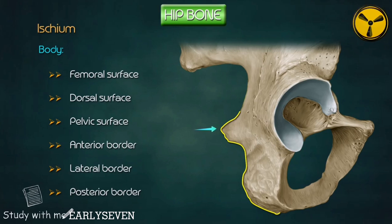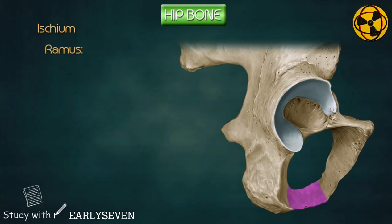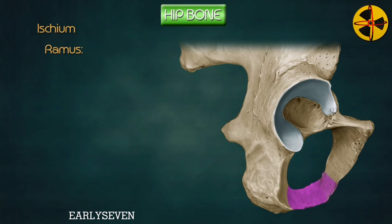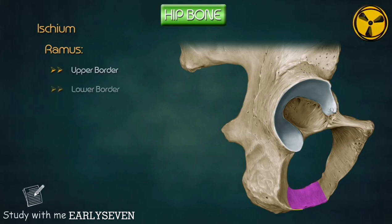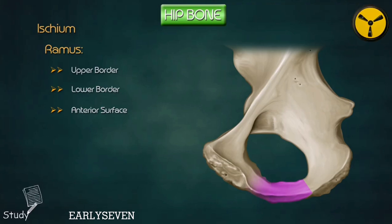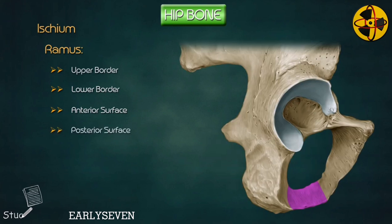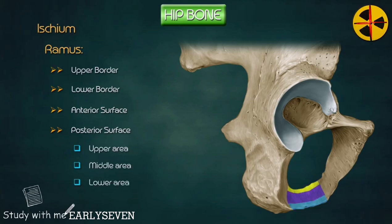The ischial spine is a projection at the end of the posterior border. Ramus. It extends upwards, forwards, and medially from the body of the ischium to join the inferior ramus of the pubis. It has two borders and two surfaces: the anterior surface is continuous with the anterior surface of the inferior ramus of the pubic bone; the posterior surface is divided into three areas — upper, middle, and lower — by two blunt ridges.